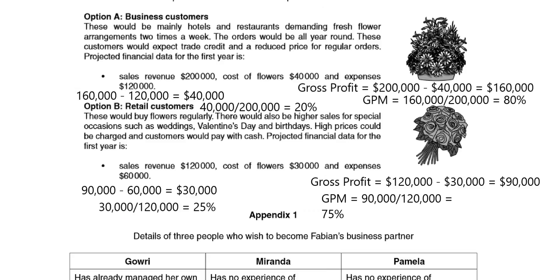Looking at the qualitative information for option A: demanding fresh flower arrangements two times a week means orders are regular and all year round, which is more stable. However, these customers would expect trade credit, which could delay inflows for Fabian, and a reduced price for regular orders could impact revenue. For option B, sales would be quite regular with higher sales for special occasions like weddings and Valentine's Day, which they could embrace. Higher prices and cash payment mean no delay in inflows. However, the main disadvantage is that the sales revenue is much lower.